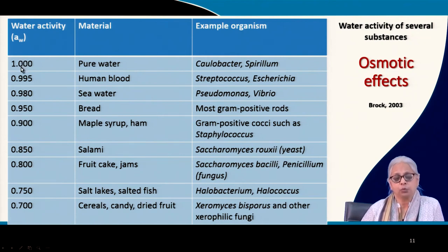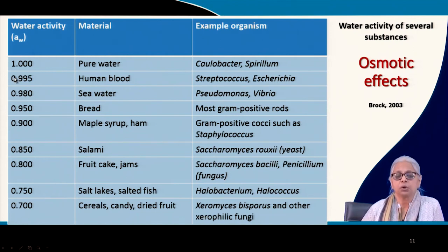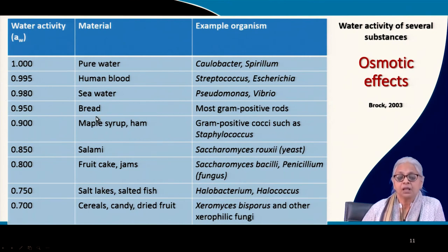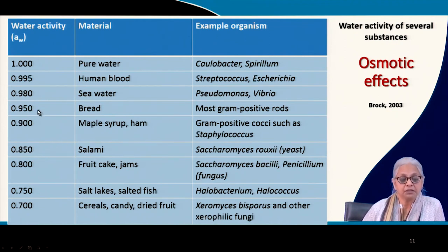Pure water, with activity of 1, allows certain bacteria like Caulobacter and Spirillum to survive. Human blood has a water activity of 0.995, and Streptococcus, E. coli, and several pathogenic organisms can survive under those conditions. Seawater has much higher ionic strength and lower water activity at 0.98, and Pseudomonas and Vibrio cholerae — famous for causing cholera — can survive under high ionic strength. Foods like breads, maple syrup, and fruit cakes have very low water activity ranging from 0.95 to 0.8, and various pathogenic bacteria can be found there.